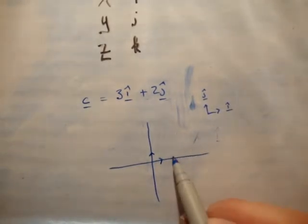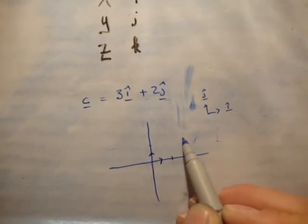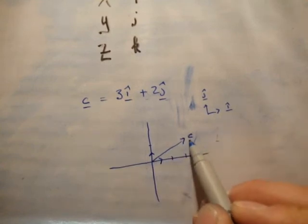Well then, 3i-hat would be 1, 2, 3, 2j-hat would be 1, 2, and look, there's your vector there. This would be the vector C.